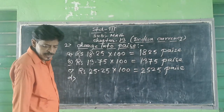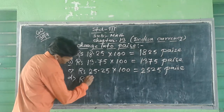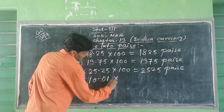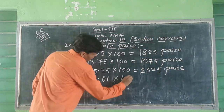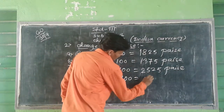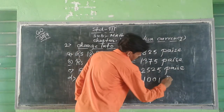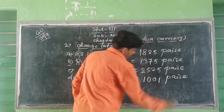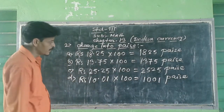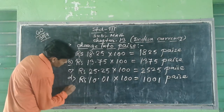Question 2d: Rupees 100.15 into 100 equal to 10015 paise.